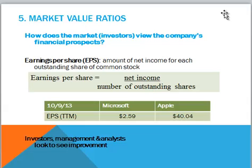One measure is earnings per share, which is the amount of net income for each outstanding share of common stock, calculated by taking net income divided by the number of outstanding common shares. Earnings per share obtained from Reuters is a TTM number — trailing 12 months — so it uses the most recent 12 months of data available. The earnings per share for Microsoft was $2.59 and Apple $40.04. What everyone looks to see with earnings per share is improvement over time; we like to see earnings per share go up.